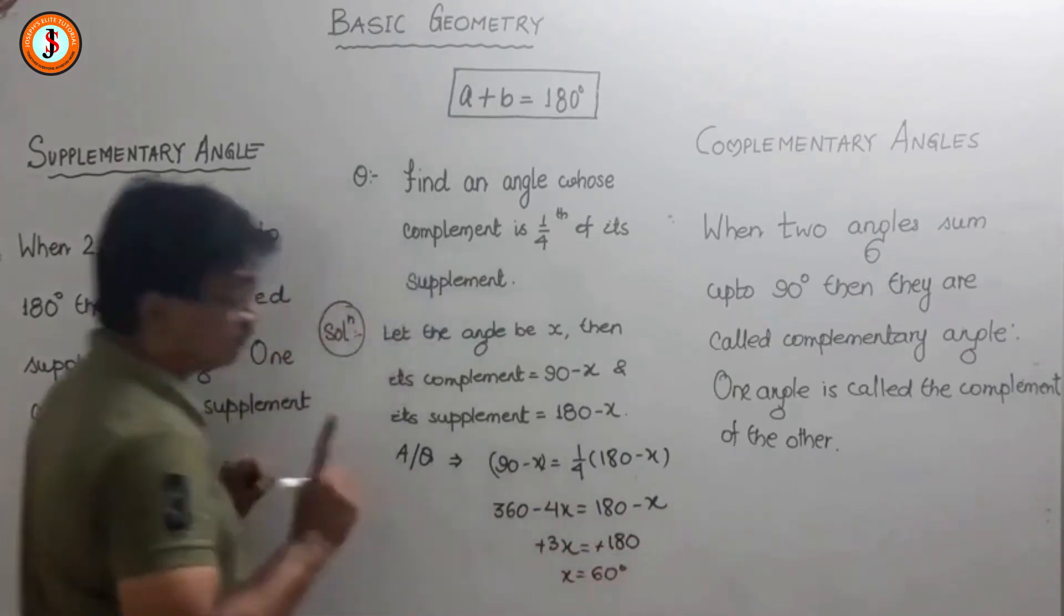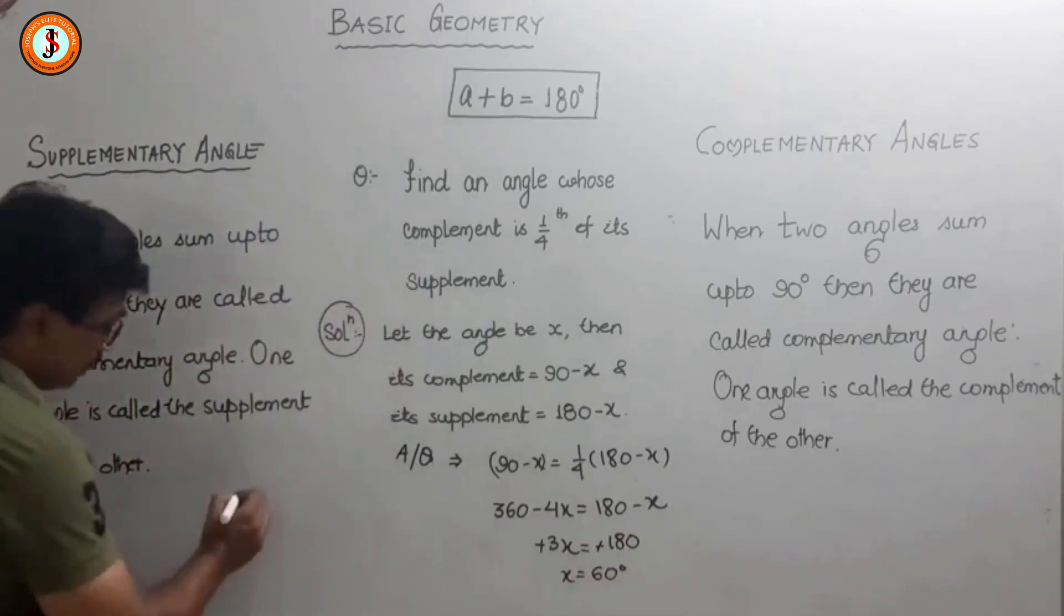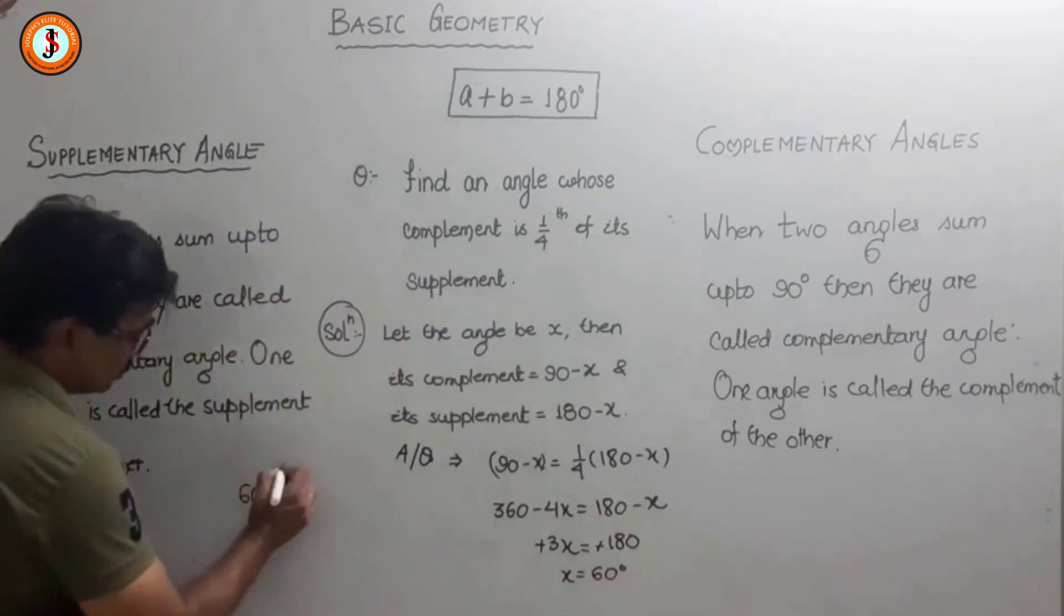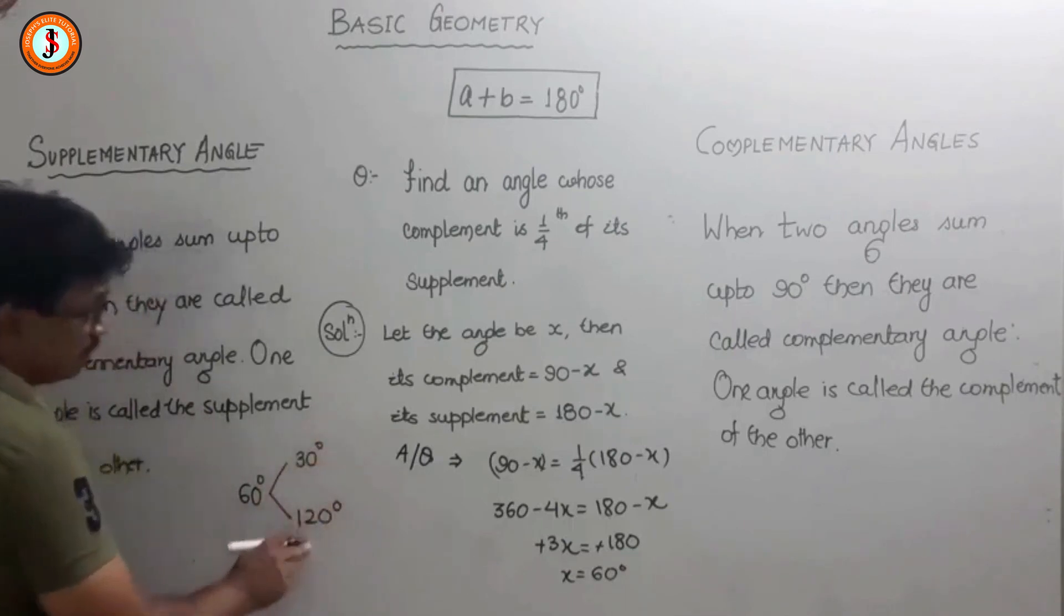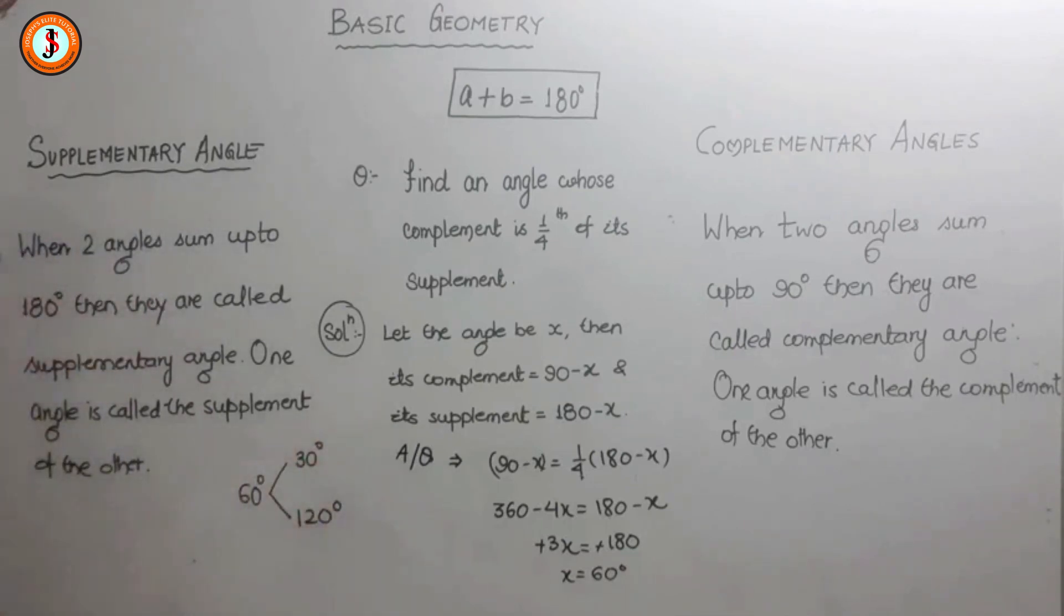Now let us verify. The angle is 60 degrees, so its complement is 30 and its supplement is 120. The complement (30) is one-fourth of the supplement (120), confirming our answer.